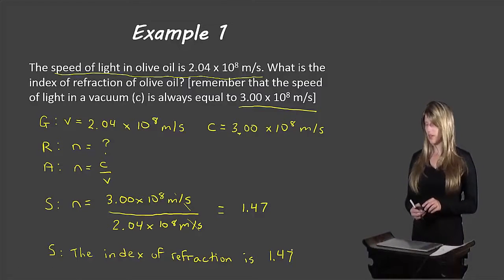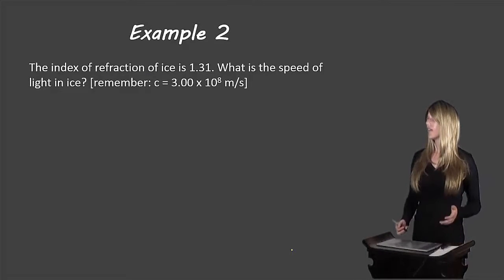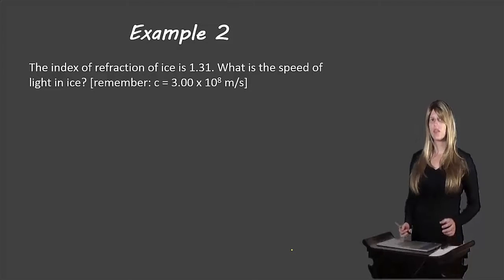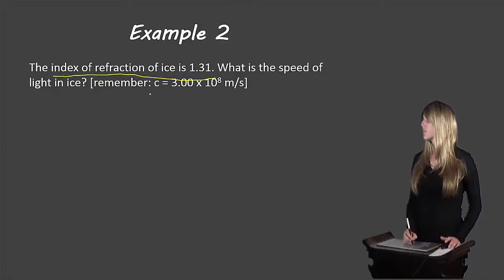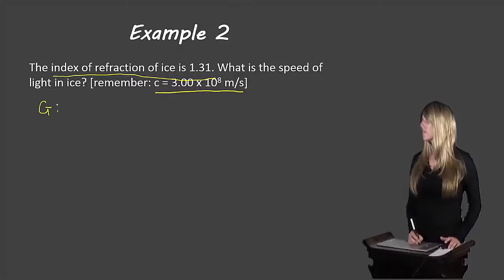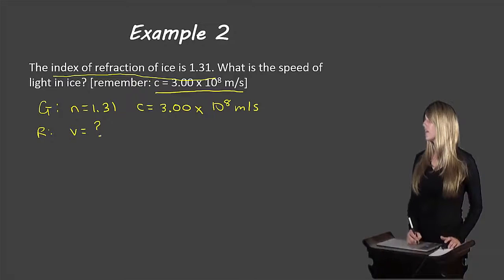Let's take a look at another example here. The index of refraction of ice is 1.33. What is the speed of light in ice? And again, C is 3.00 times 10 to the 8 meters per second. So we're given some information here. The index of refraction is 1.33, and C is 3.00 times 10 to the 8 meters per second. So we'll write these down as our givens: N equals 1.31 — again, there's no units for N — and C equals 3.00 times 10 to the 8 meters per second. The required, what we need to know, is the speed of light in ice.